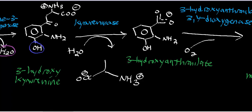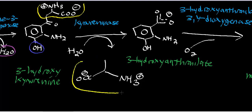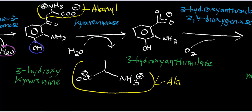Now we have 3-hydroxykynurenine. I want to point your attention to this portion of the molecule highlighted in yellow. If you look at this group here — this is just L-alanine, so you'd call this an alanyl group. What kynureninase is going to do is target this particular carbon in a nucleophilic acyl substitution reaction, and it's going to hydrolyze off L-alanine. What you should be left with is 3-hydroxyanthranylate.